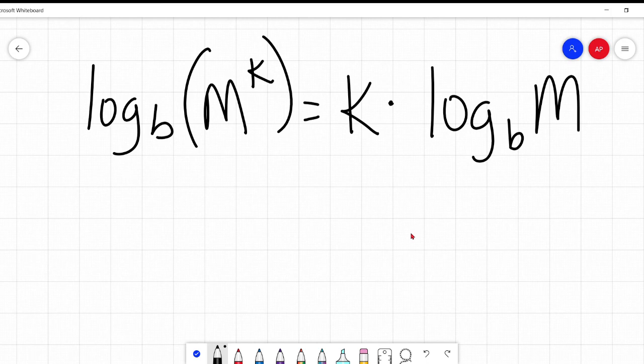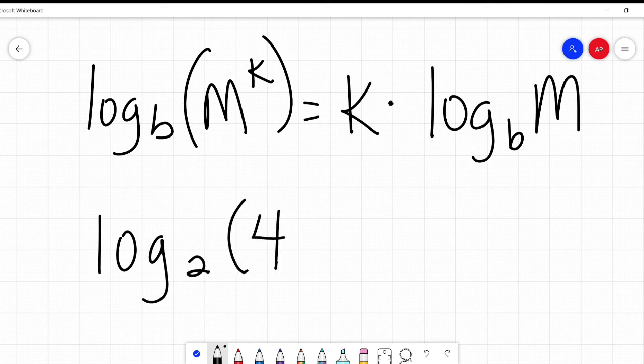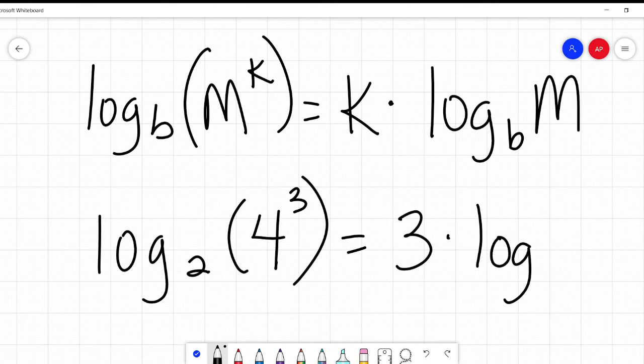Log base B of M to the power of K equals that same constant K times log base B of M. Let's put some numbers in here. We'll say log base 2 of 4 to the power of 3. It's saying this is equal to 3 times log base 2 of 4.